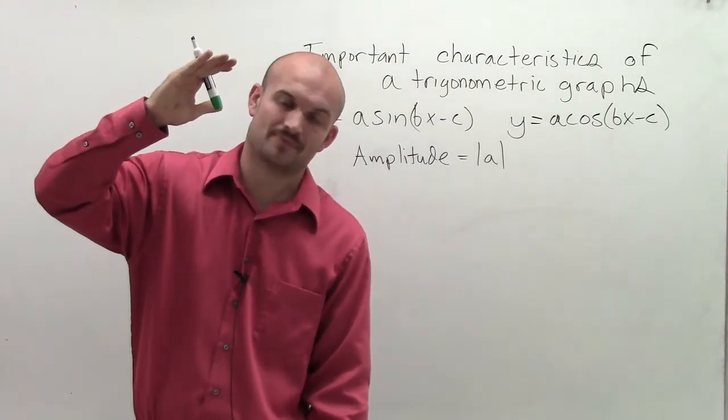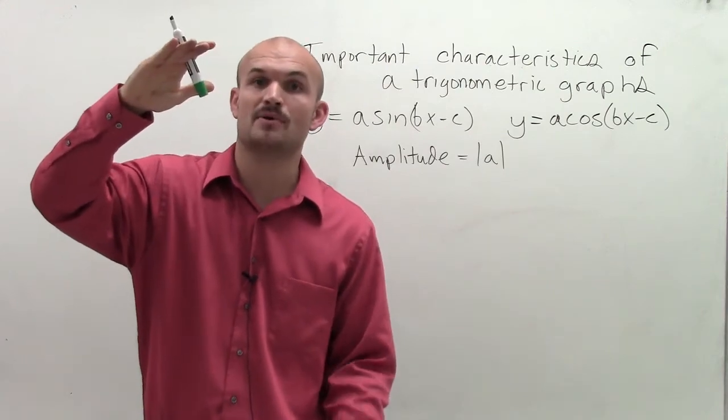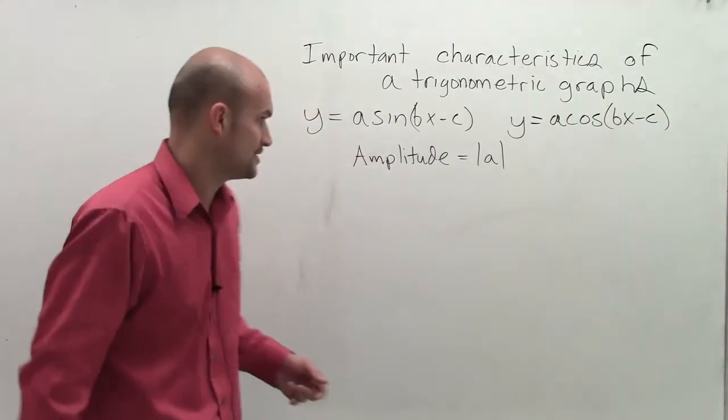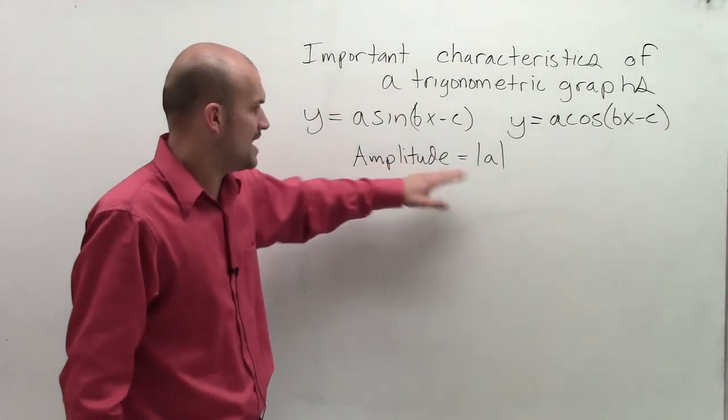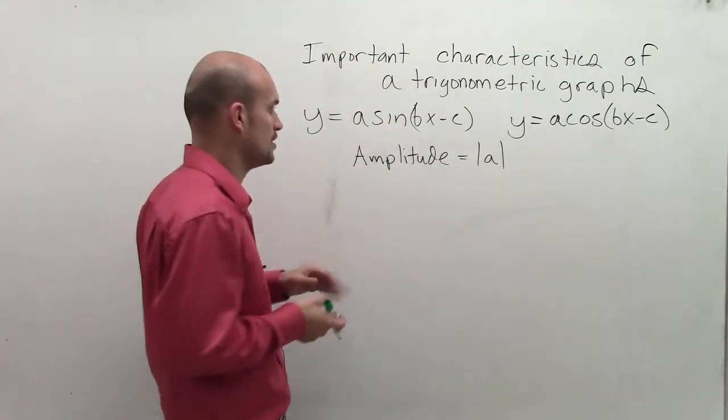So the amplitude is actually half of the distance from your maximum point on your graph to your minimum point on your graph. So the amplitude is going to tell you how much your graph is going to vertically stretch or shrink.